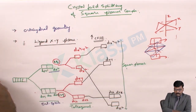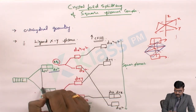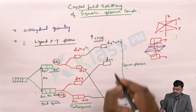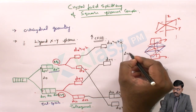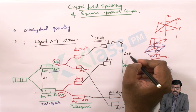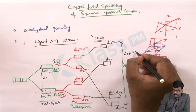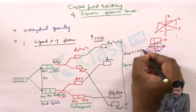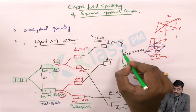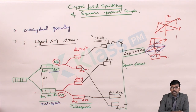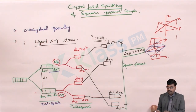If we consider the delta values — the crystal field stabilization energies — δo is the crystal field stabilization energy of octahedral, and δsp is the crystal field stabilization energy of square planar. It is said that the δsp value is 1.3 times more than δo, meaning δsp is 0.3 times greater than the octahedral crystal field stabilization energy.